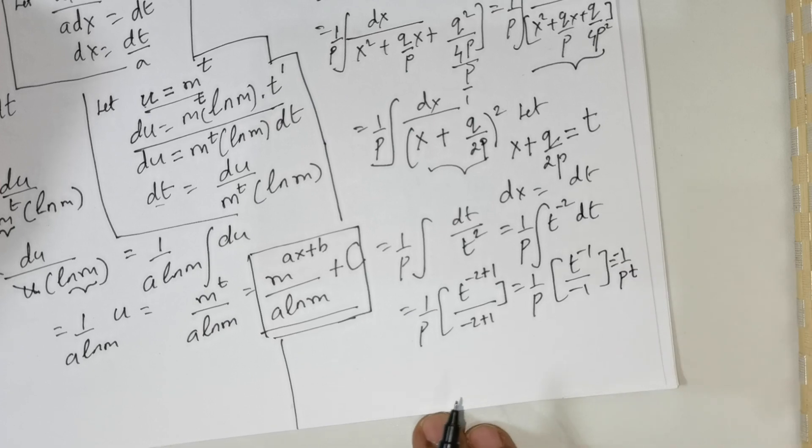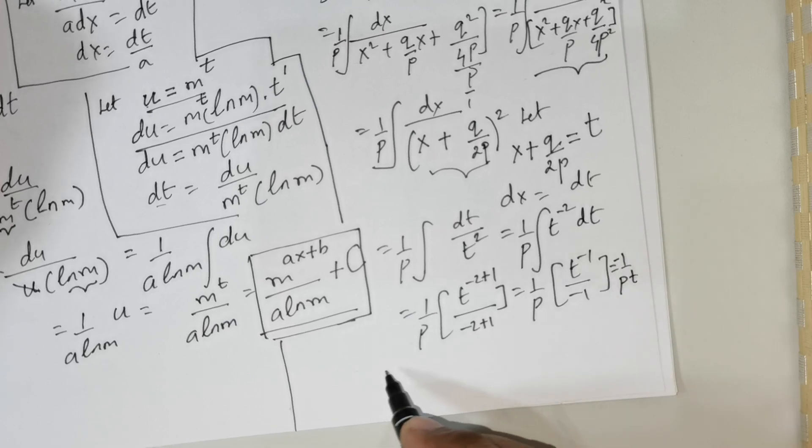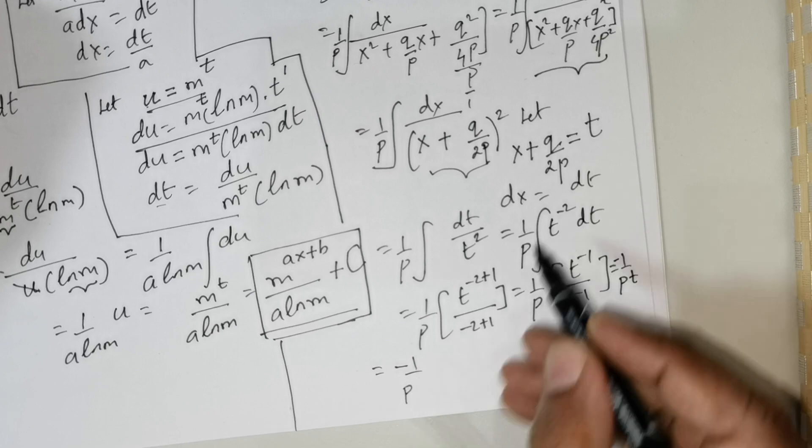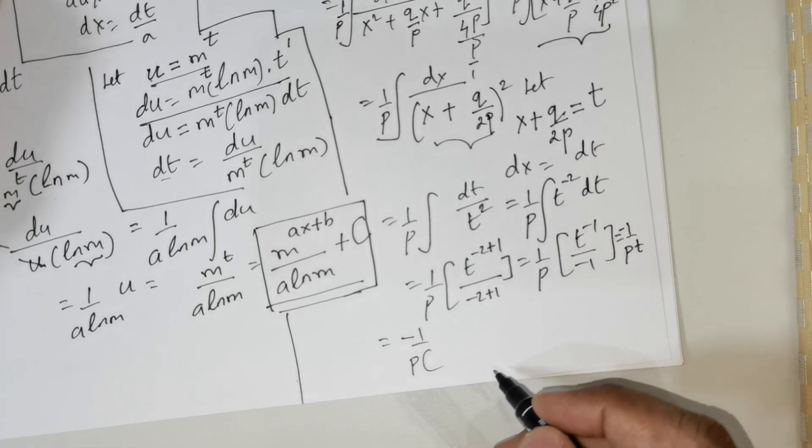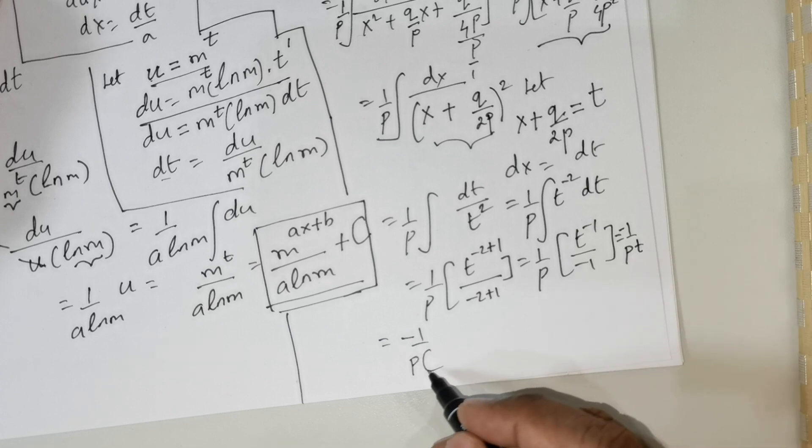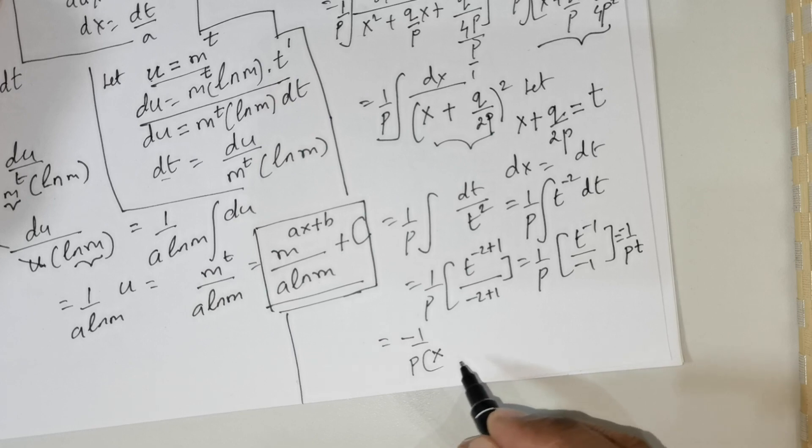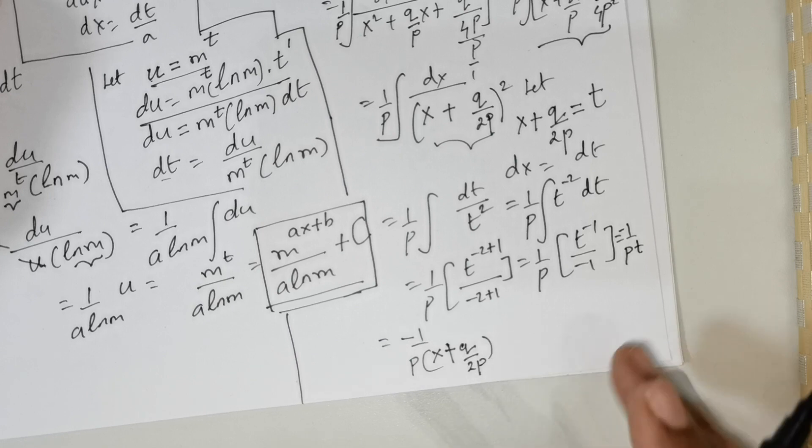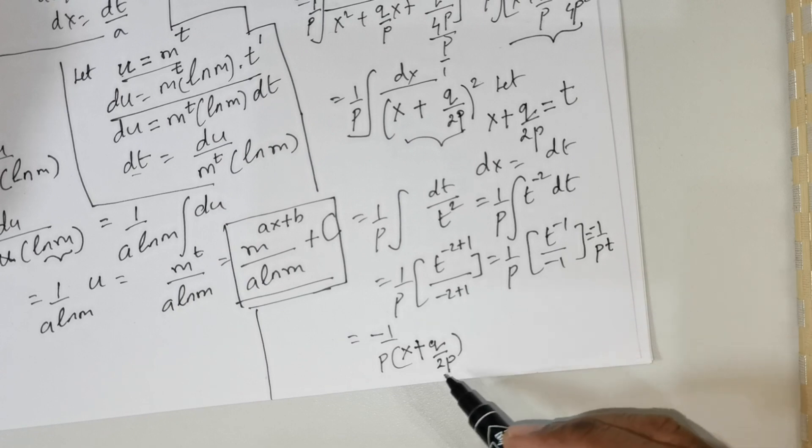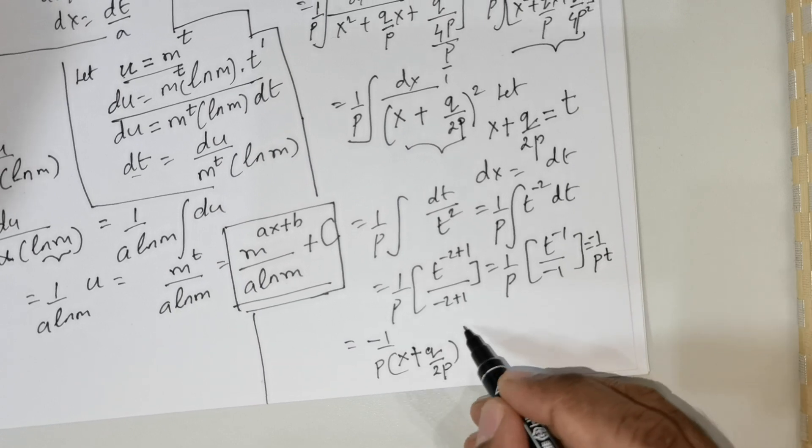Now what is t? t is nothing but this quantity. Substitute that quantity. So that's going to be negative 1 over p times x plus q over 2 times p.